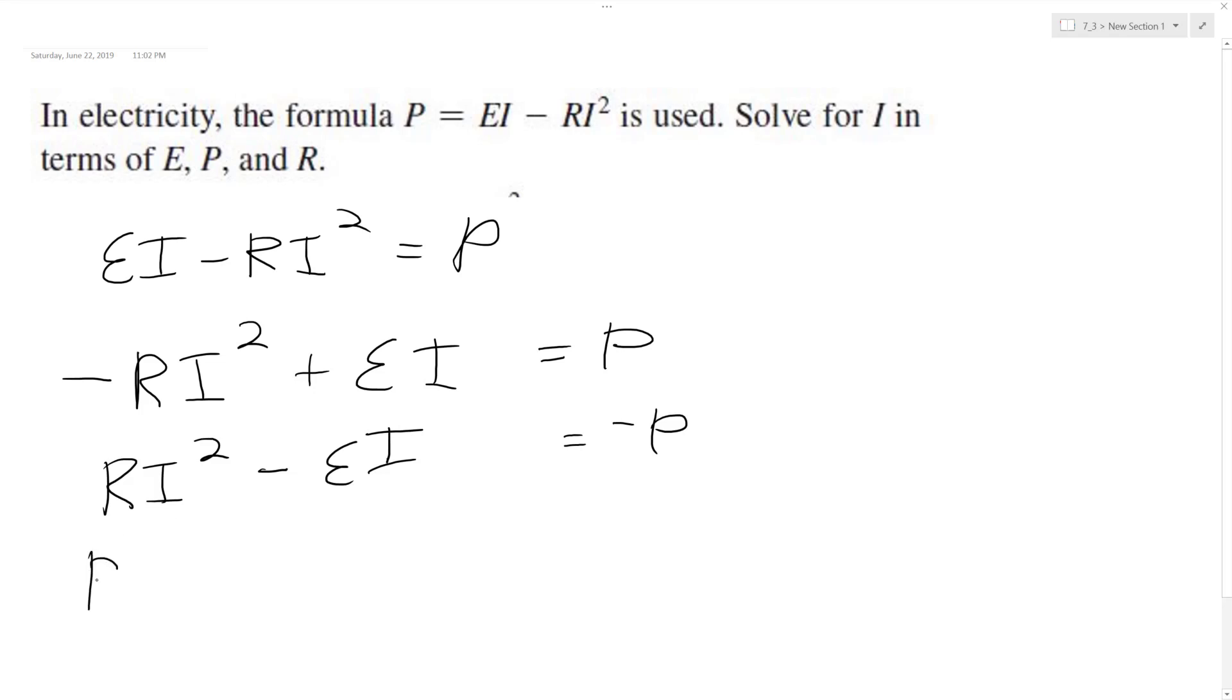Okay, and then I'm going to factor out the RI squared minus E over RI equals negative P. Alright, so now I'm going to complete the square here.